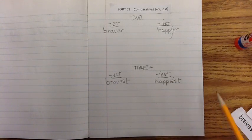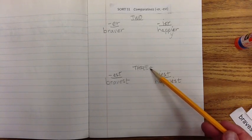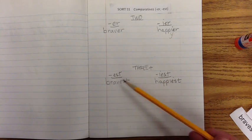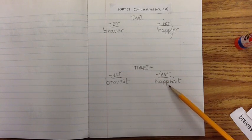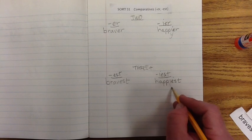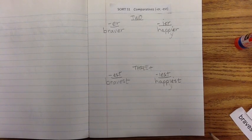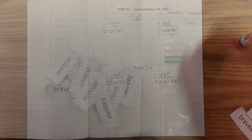And down below, when we're comparing three or more items or things or people, we use E-S-T, or in this case, when the word ends in Y, we drop the Y and add I and then E-S-T. Okay. Have some fun with the rest of the sort. Go.